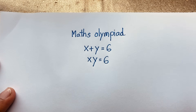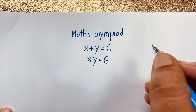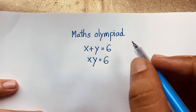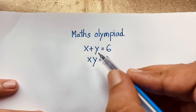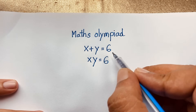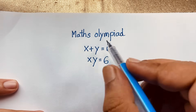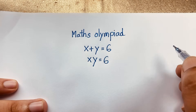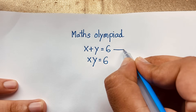Hello everyone, welcome to Russell's classroom. Today we are solving an interesting math olympiad question. It is an easy math problem, which is x plus y is equal to 6, x times y is equal to 6, and we are finding out x and y. How to solve this interesting math question.